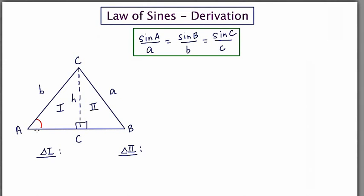According to SOHCAHTOA, sine of A is the opposite side over the hypotenuse. The side opposite angle A in this right triangle is h, and the hypotenuse is b. So the ratio for sine A is h over b.